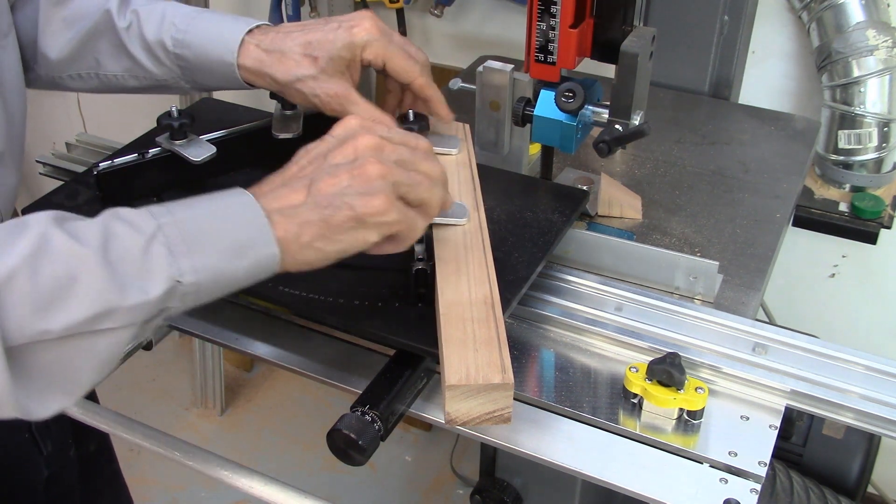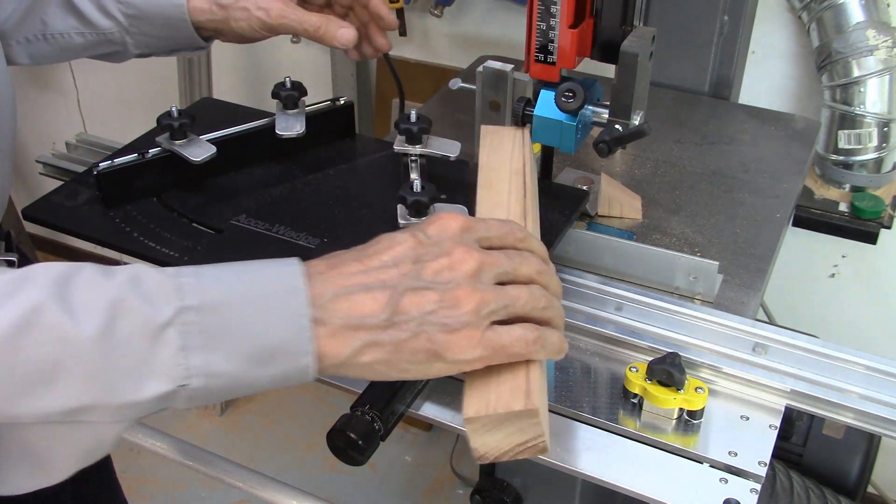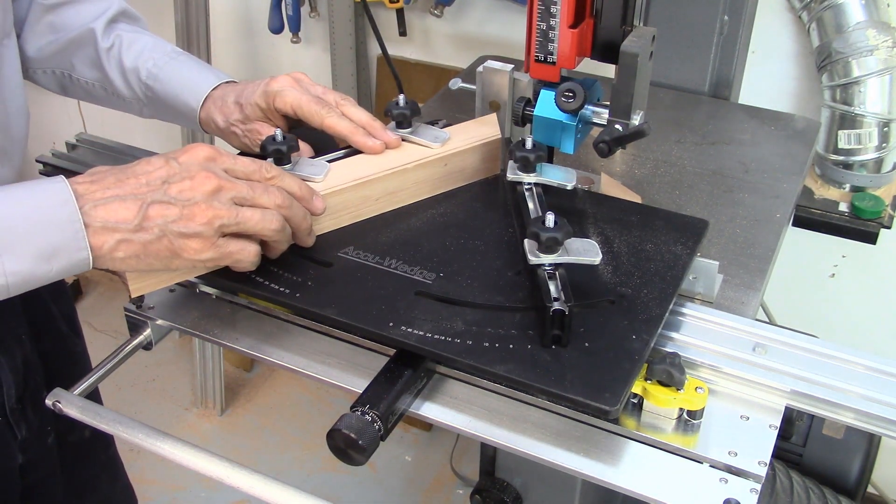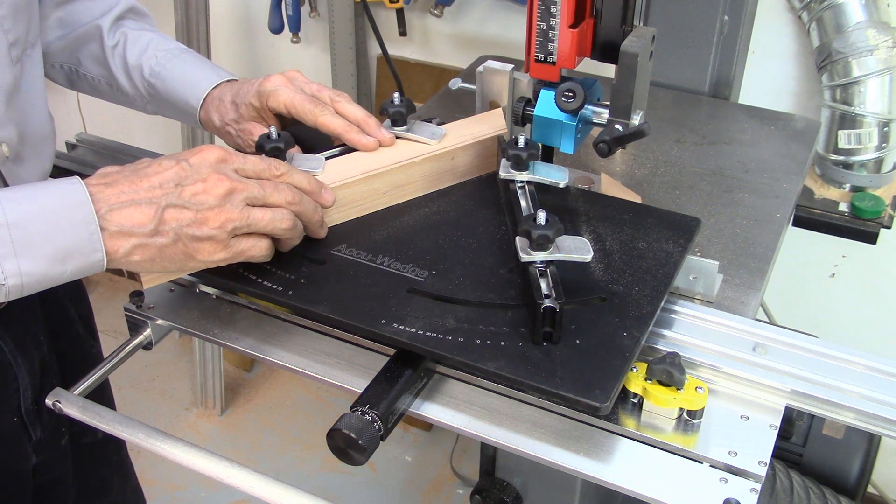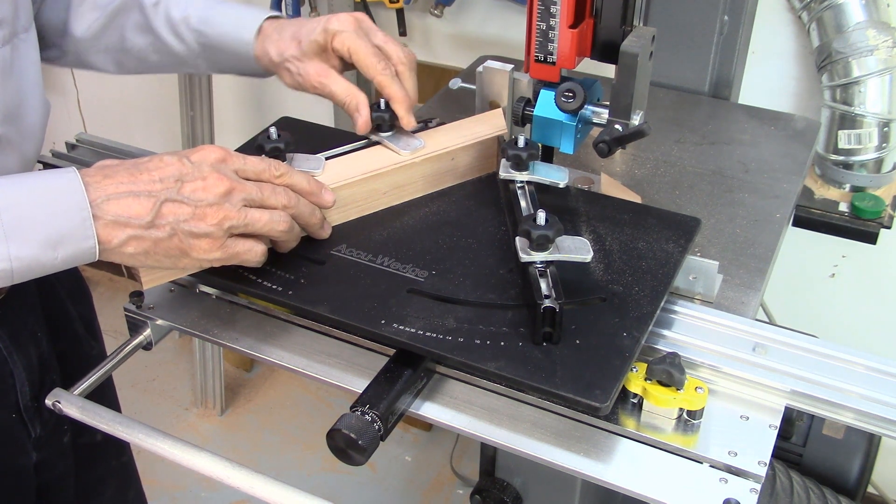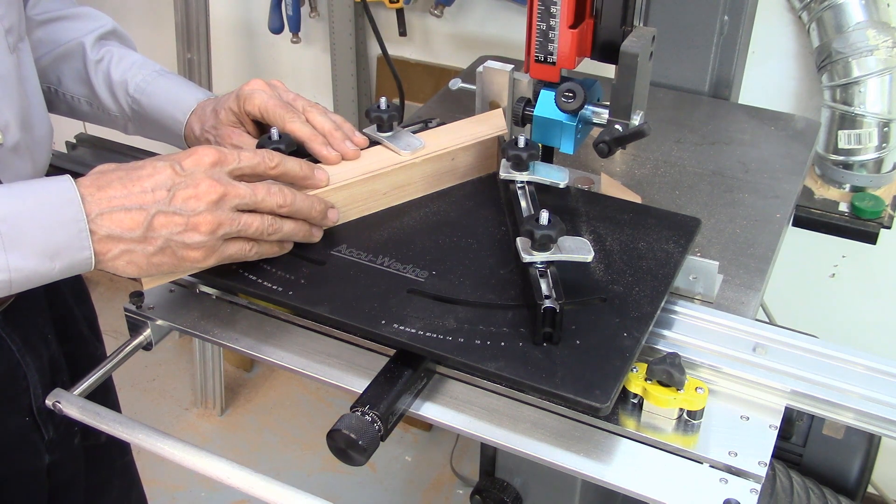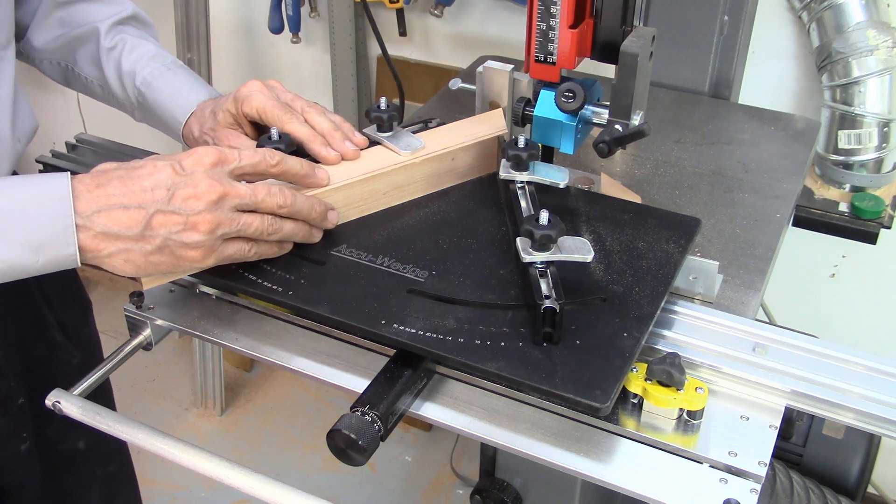And then we've produced our first segment. And now I take, remove the, loosen the clamps, move the board to the other fence, move it against the stop and just keep repeating that process until I have all the six segments that I need for the segmented ring.